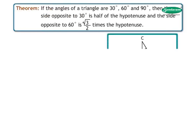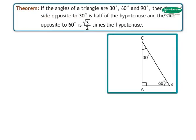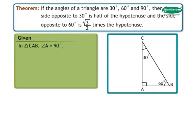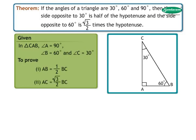If the angles of a triangle are 30 degrees, to prove: Number 1, AB is equal to 1 upon 2 BC. Number 2, AC is equal to root 3 upon 2 BC.